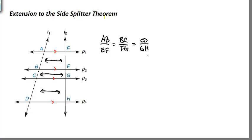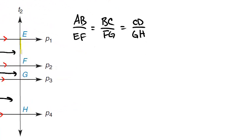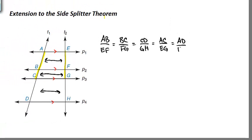So like BC over FG or CD over GH. We could even pick off segments here that aren't just the smallest segments. So for example, if I were to look at AC and EG, those should also be proportional to the rates that we already saw. So AC over EG. We could go the whole thing, AD compared to EH. All of those should be the same ratio and that's just basically an extension to that side splitter theorem.